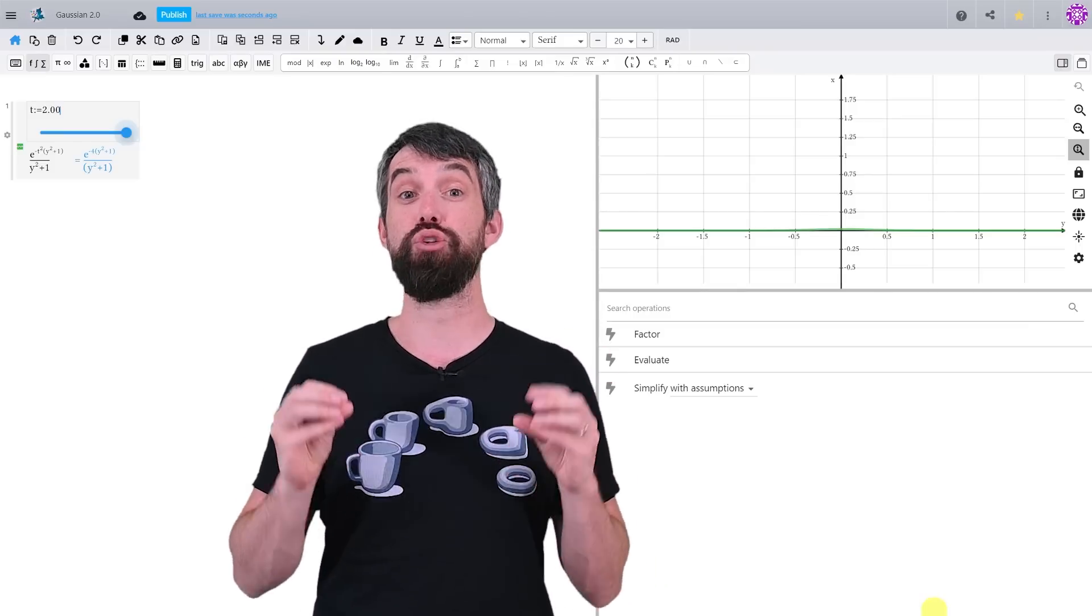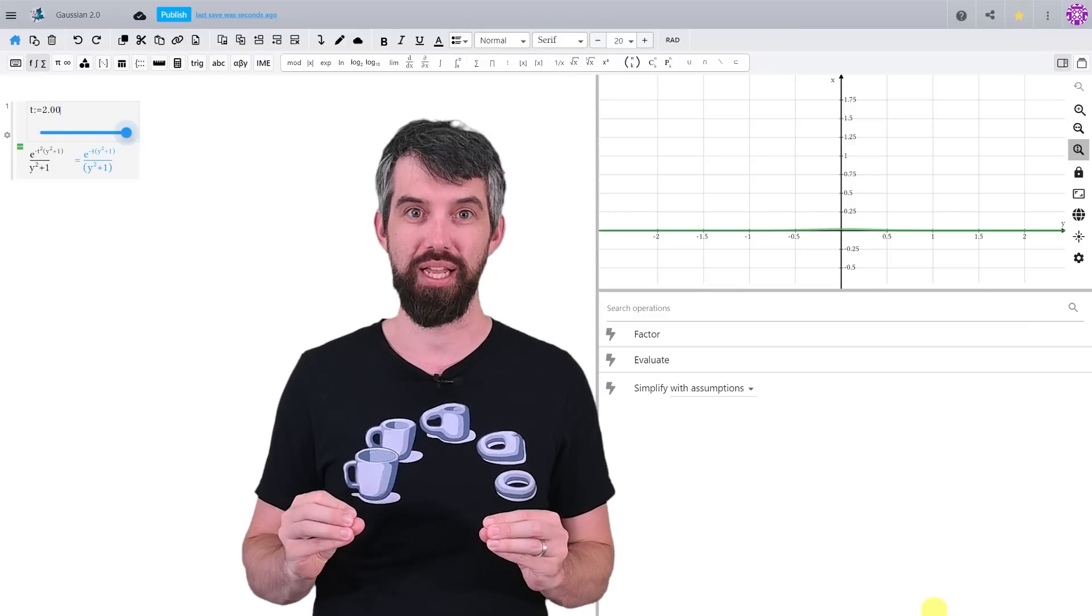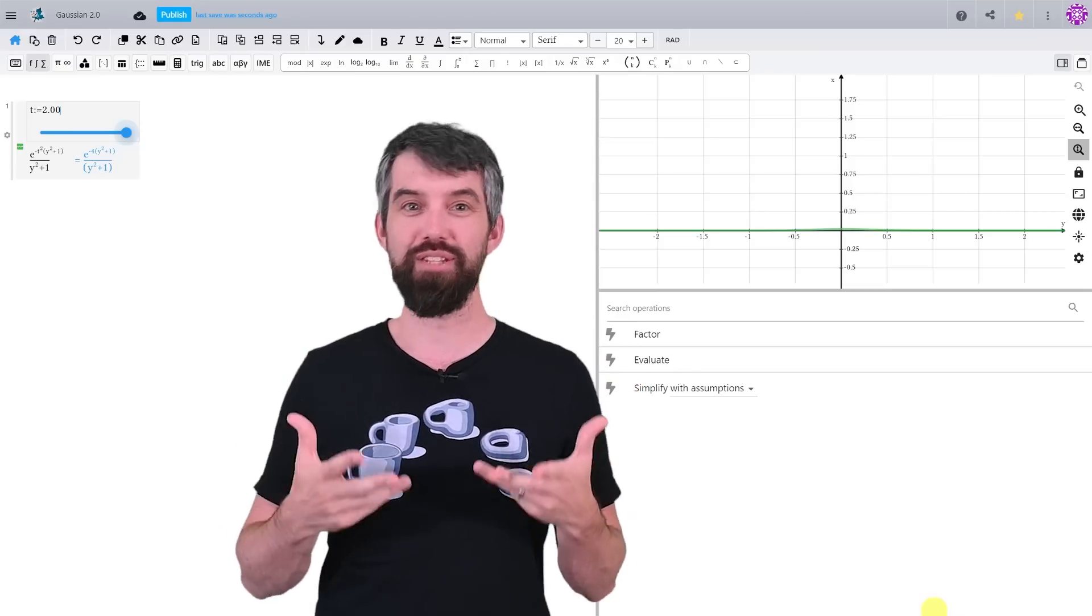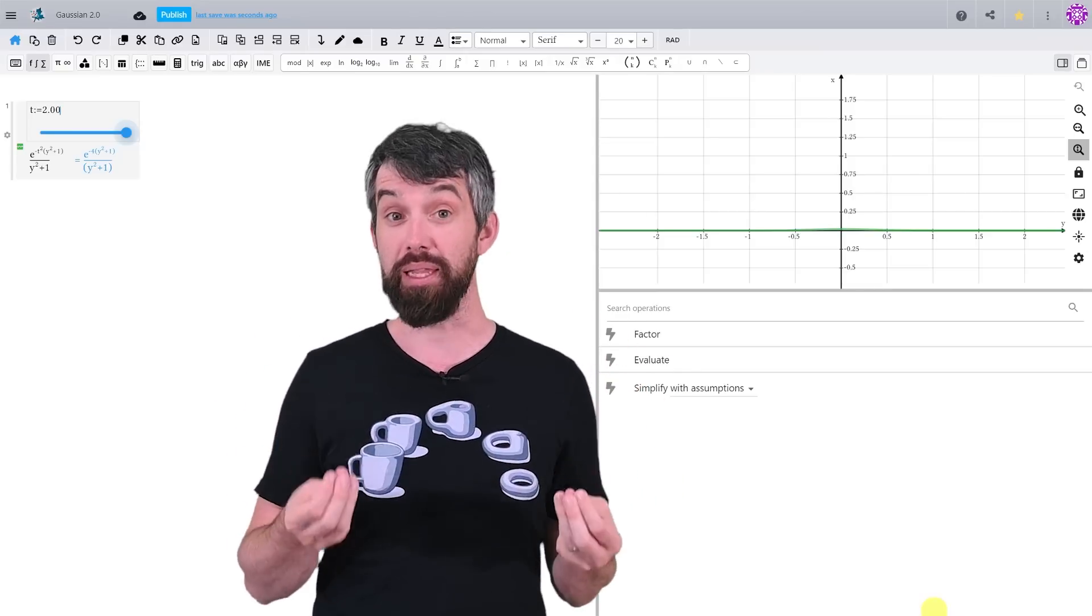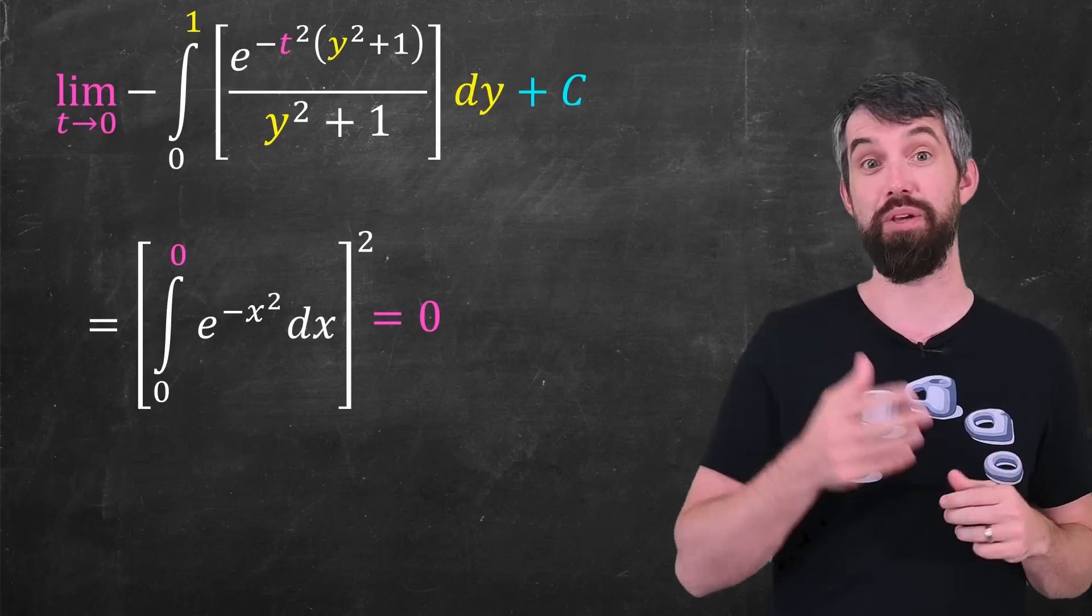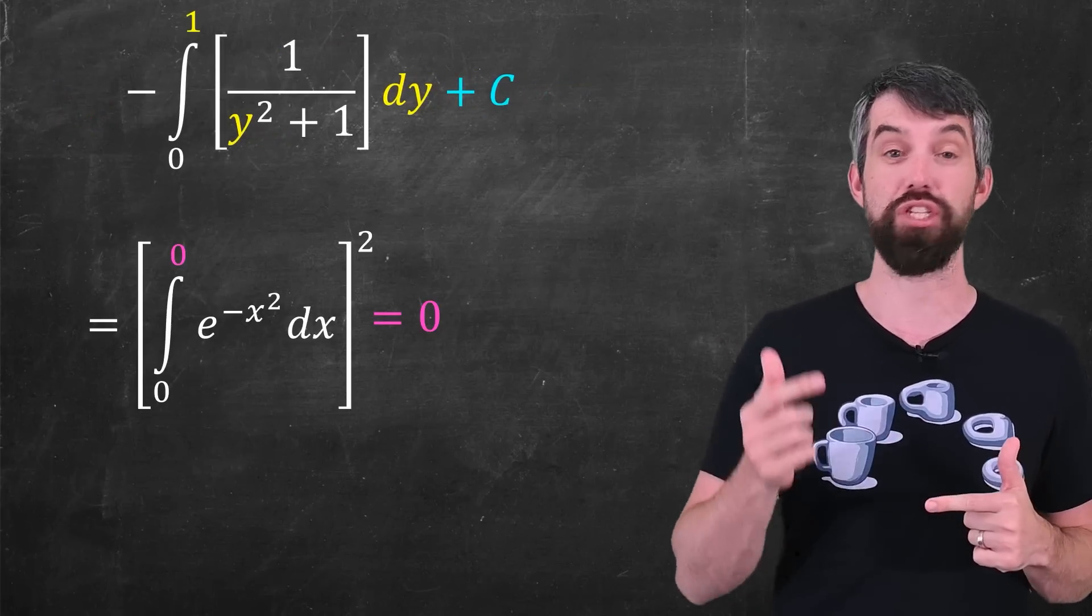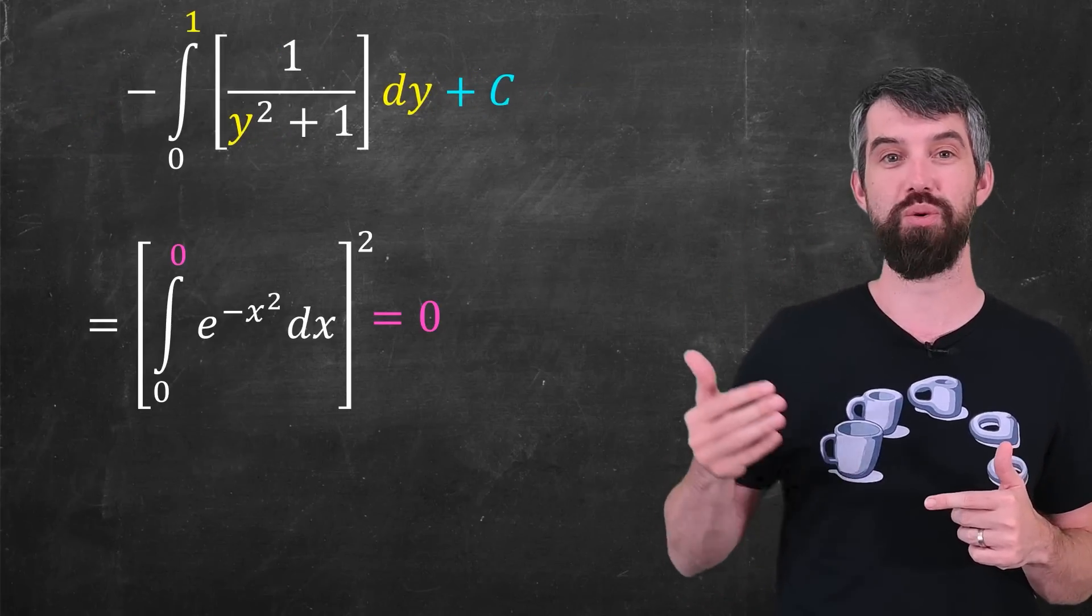On the bounded interval with y between zero and one, there's no problem spots, no like zeros in the denominator that are going to blow up. And this type of convergence is actually uniform convergence. And this is important for us because it satisfies the technical conditions under which we're allowed to interchange the limit and the integral side.